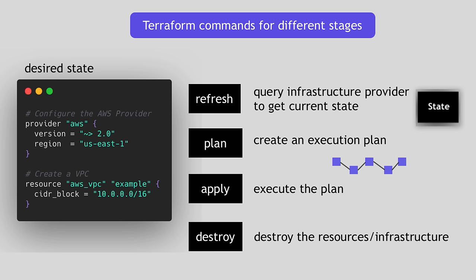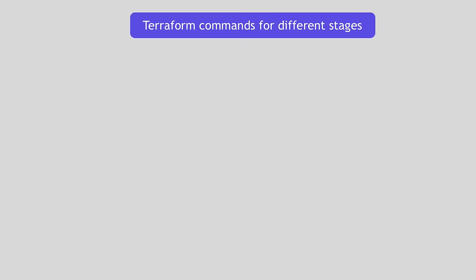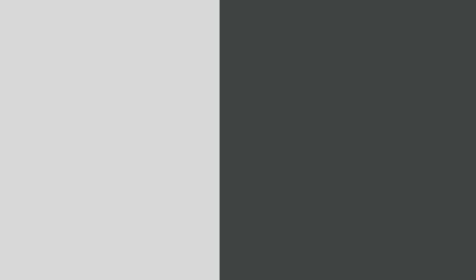The destroy command could be used if, for example, you create an environment for an important demo day and you don't want to interfere with existing environments. Once the demo is over, you can destroy the whole setup. Destroy, like apply, will also check what's currently running and create a plan of what needs to be removed in which order. I hope this gives you a good high-level overview of Terraform and how it works. If you want to learn more, subscribe to my channel and stay tuned. Thanks for watching and see you in the next video.